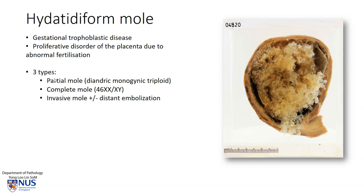There are three types of moles. There is the partial mole, which is formed from material from two sperms and one egg, and therefore the total chromosomal makeup is triploid. And we have the complete mole, which is diploid, but in which the genetic material solely originates from the sperms — either one sperm that has duplicated, or two different sperms fertilizing an empty ovum.